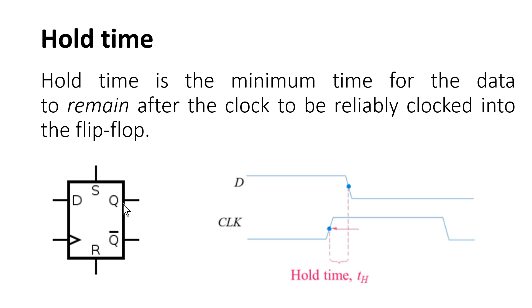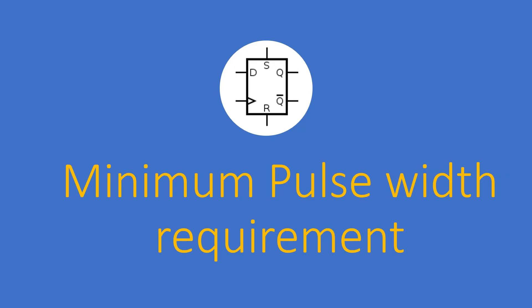Now we are going to discuss a very important characteristic called minimum pulse width requirement — this is the crux of our video. Almost all modern static timing analysis tools report a slack for this minimum pulse width requirement. If the slack is negative, the design will not work; it must always be positive.